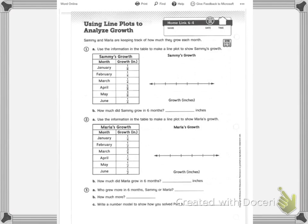Using line plots to analyze growth, home link 6-4. Sammy and Maria are keeping track of how much they grow each month. Use the information on the table to make a line plot to show Sammy's growth. So let's look, we have 8's, 4's, 4's, and 8's. Well, let's make a common denominator first.